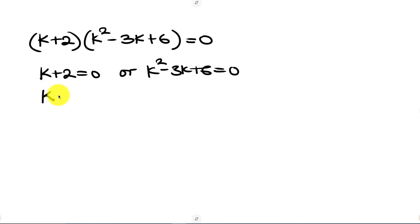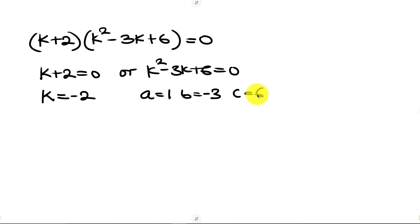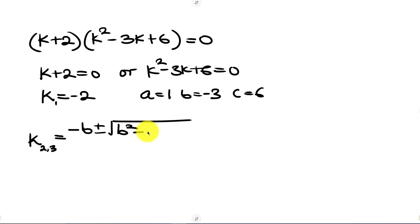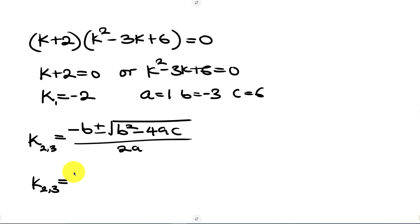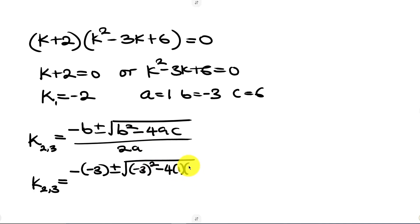From the first case it is easy to get k by moving 2 to the right hand side to give k equal to negative 2. For the second case we use the quadratic formula, where a equals 1, b equals negative 3, and c equals 6. The value of k equals negative b plus or minus the square root of b squared minus 4ac, all over 2a. Substituting: negative times negative 3 is positive 3, plus or minus the square root of negative 3 squared minus 4 times 1 times 6, all over 2 times 1.